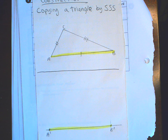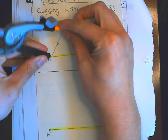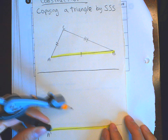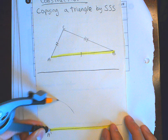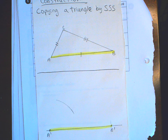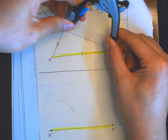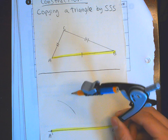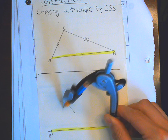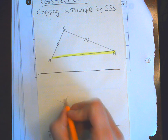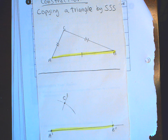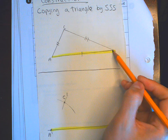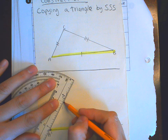Next, we're going to copy AC. We're not going to fully copy the segment yet — just measure from A to C with your compass, go to A prime, and draw an arc. Then measure from B to C, place the compass on B prime, and draw an arc so that the two arcs cross. That intersection point is C prime.